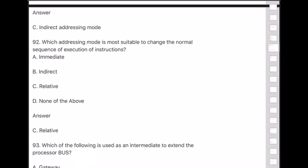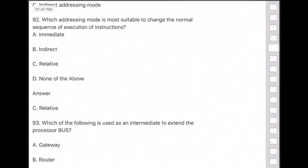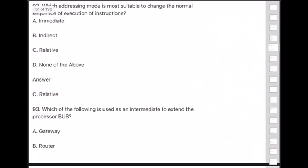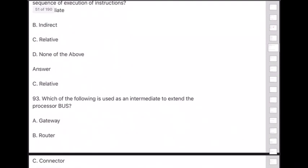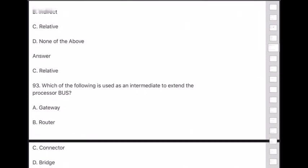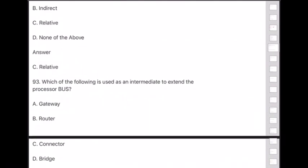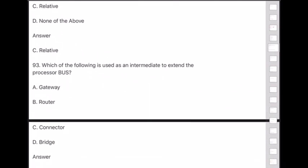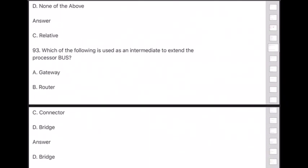Question 93: Which of the following is used as an intermediate to extend the processor bus? Answer is option D — bridge.